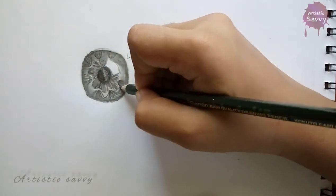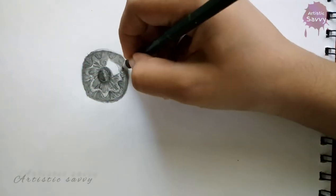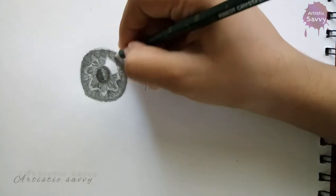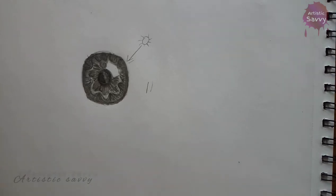We need that also to be a little darker, and the lines between them should be lighter. So I'll be using my kneaded eraser to pick up some graphite.